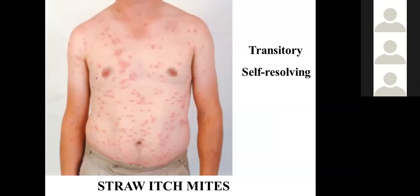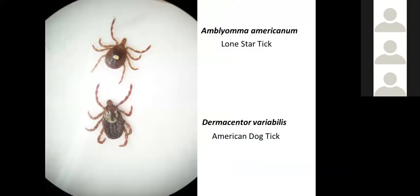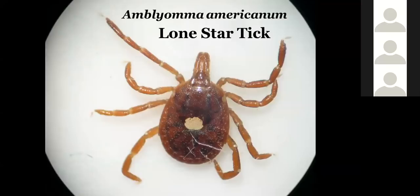Now on to ticks — ticks are also mites. Not only are they an annoyance, but some can vector disease agents. The most common tick here in the southeastern United States is the Lone Star tick, Amblyomma americanum — it has a distinctive single white spot on its back, making it identifiable on sight. The second most common in this area is the American dog tick, Dermacentor variabilis. The Lone Star tick's distribution is expanding — it's being found farther north and farther west.